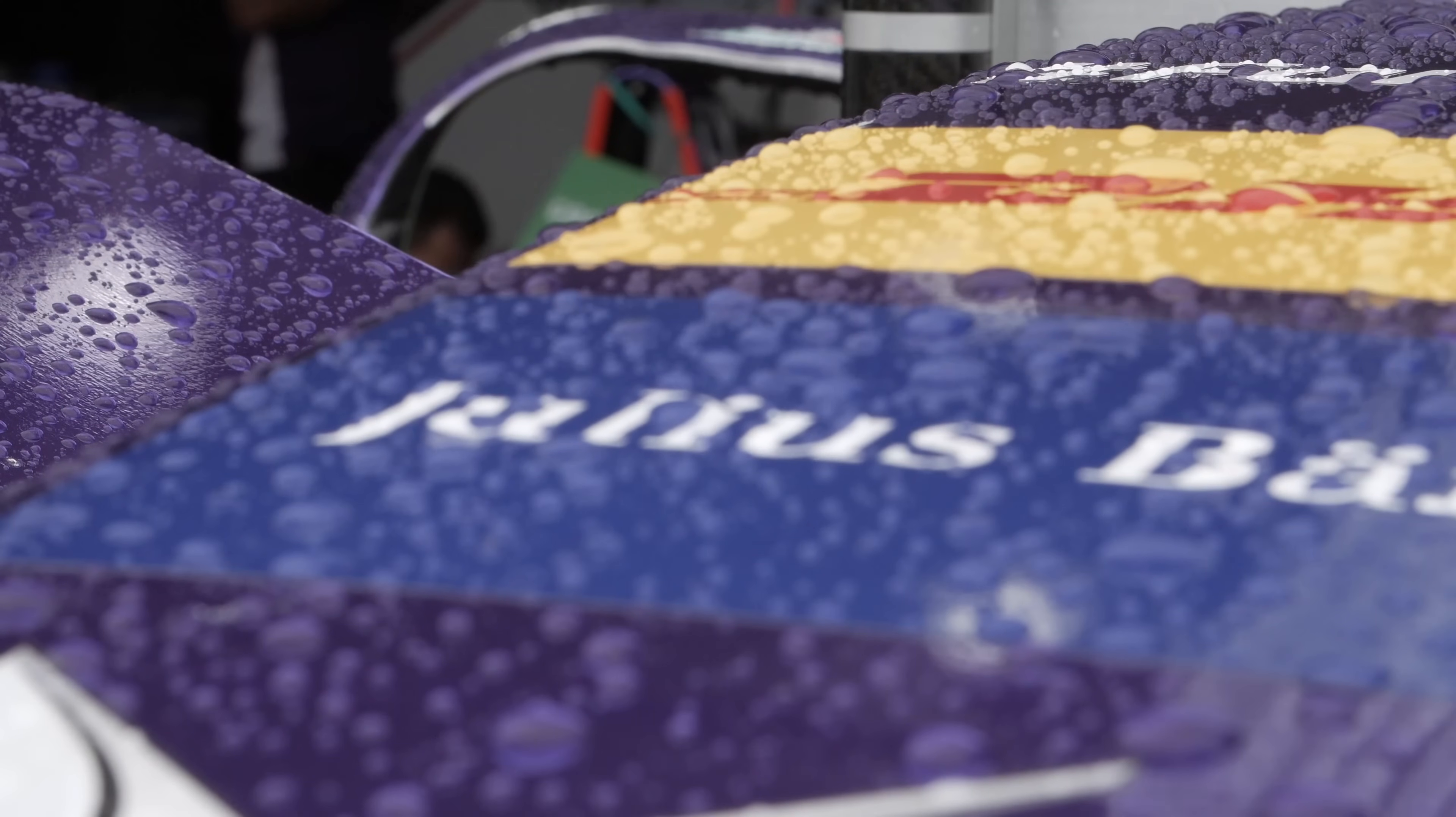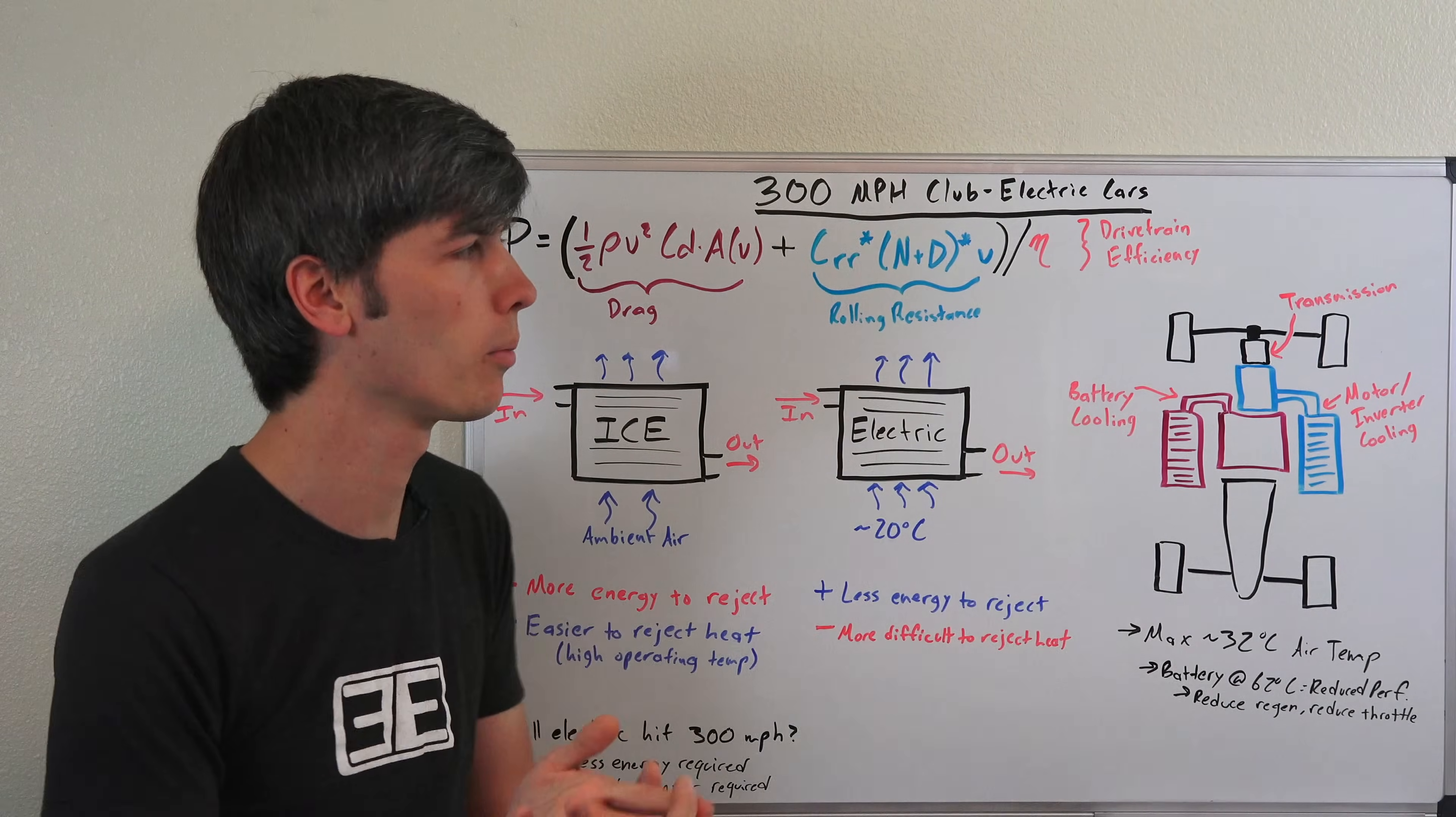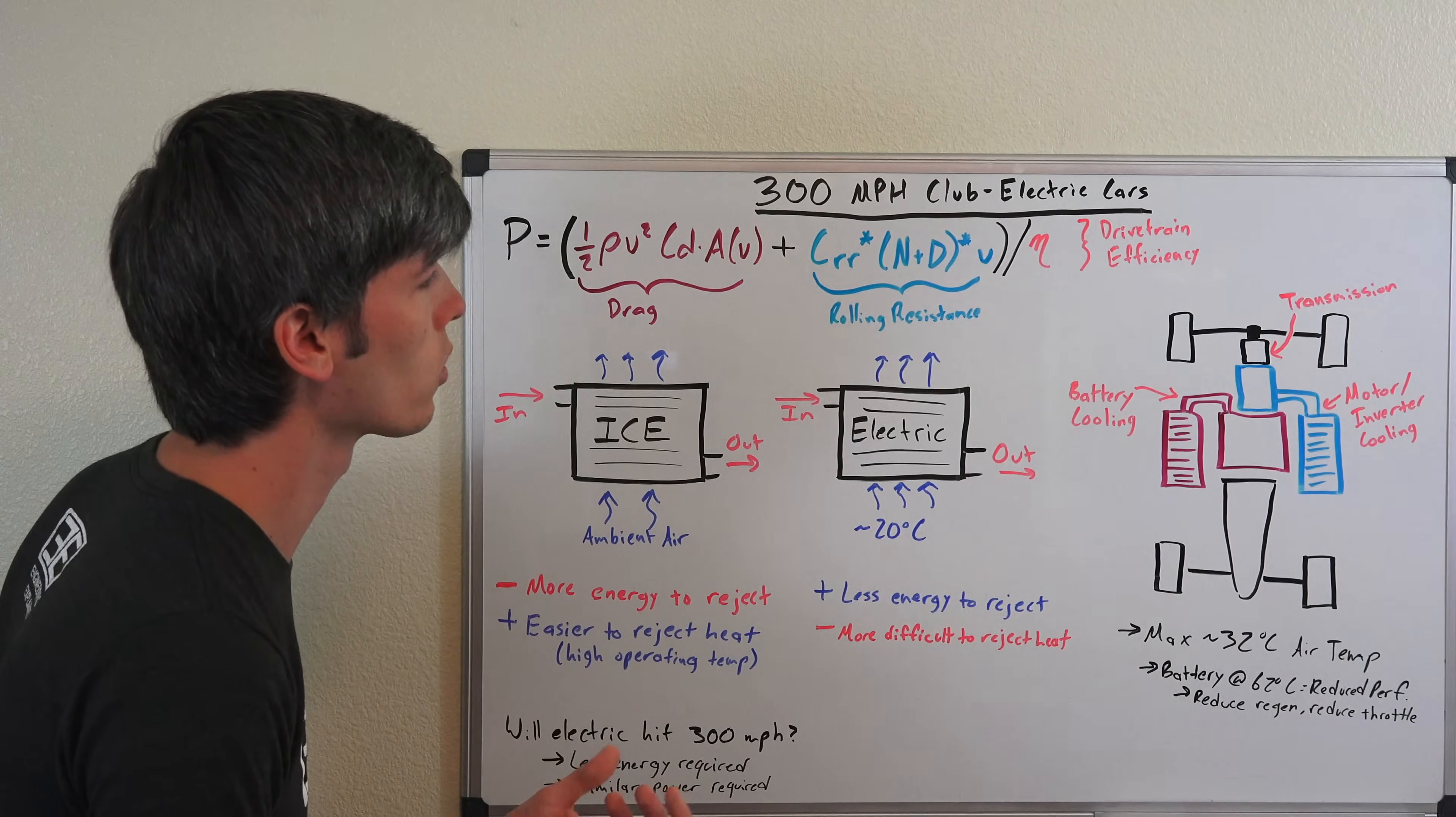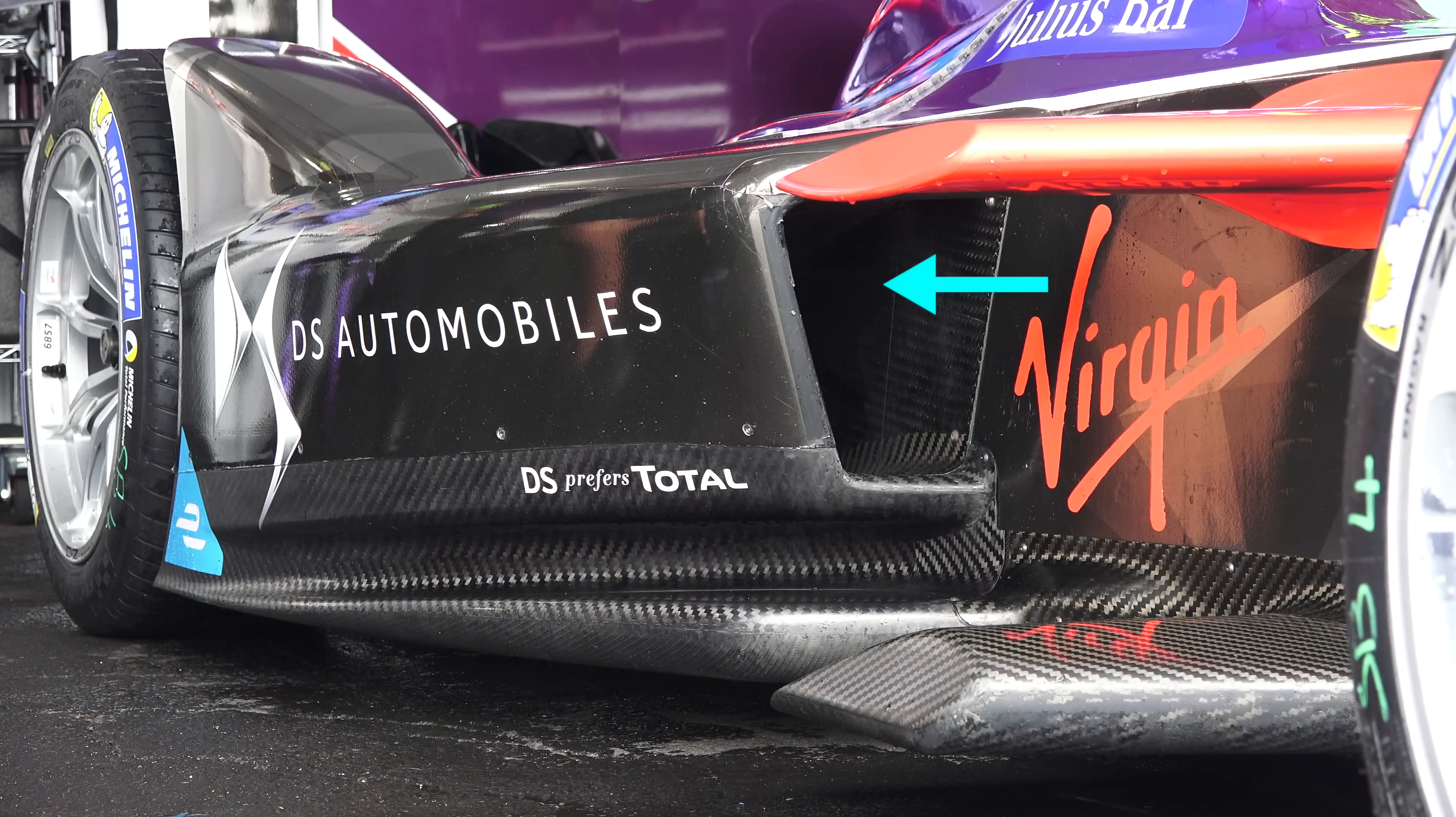Now the premise for this video stems originally from an older video I did asking the question, why has no production car ever hit 300 miles per hour? And in this video we learned a big part of why cars haven't hit this 300 mile per hour mark is because of the drag, the aerodynamic drag placed on the vehicle. And with internal combustion engines you need a lot of cooling and that cooling means you need additional drag because you have to pass air through the vehicle.